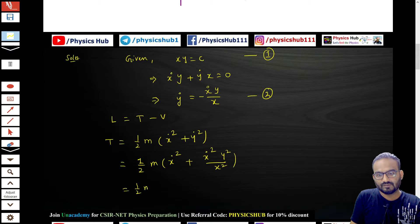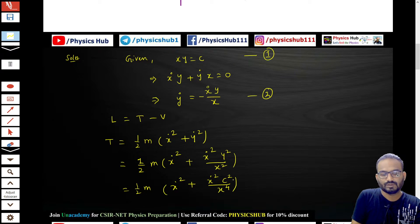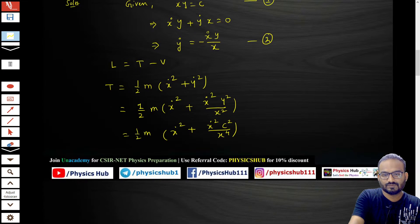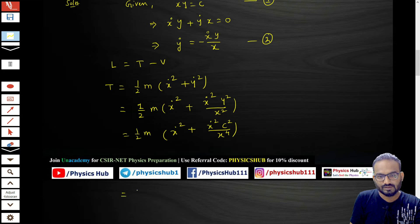Now we can substitute the value of y². y² = c²/x², so this becomes x-dot²·c²/x⁴. So we can just further take x-dot² common, so half m·x-dot²(1 + c²/x⁴). Right.